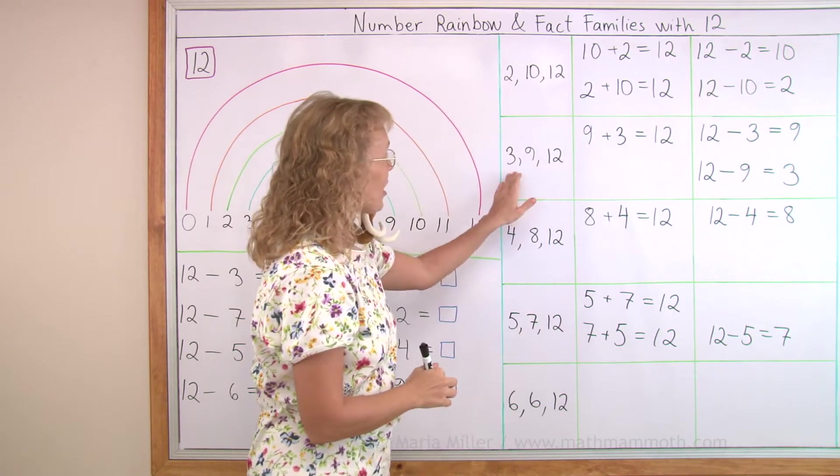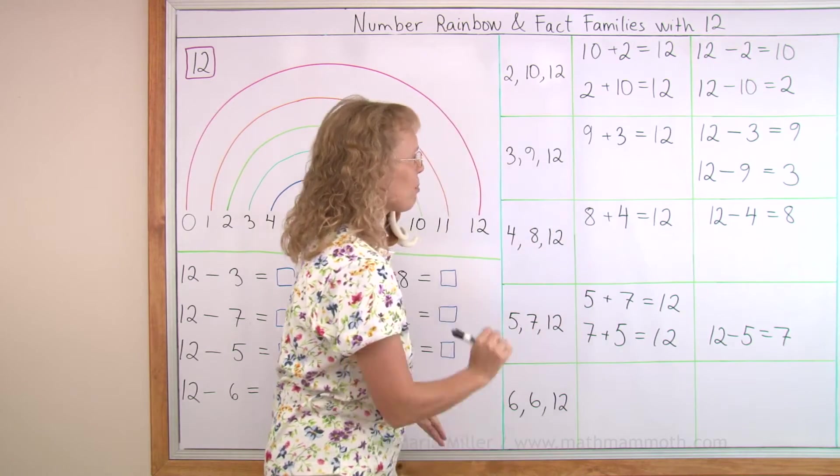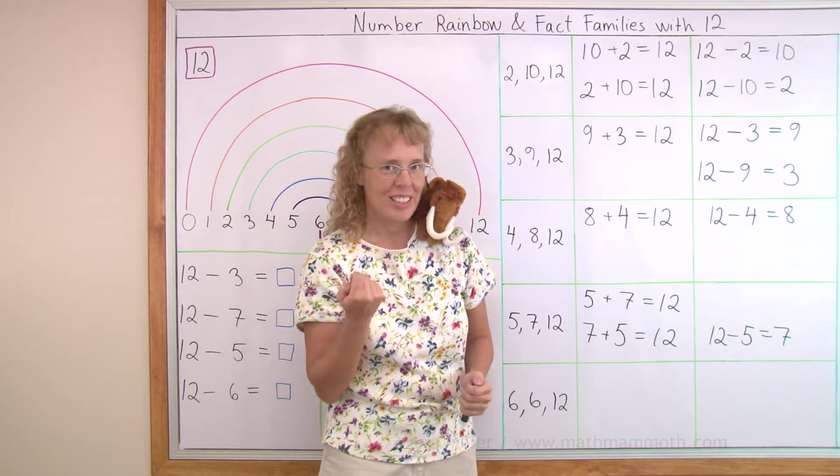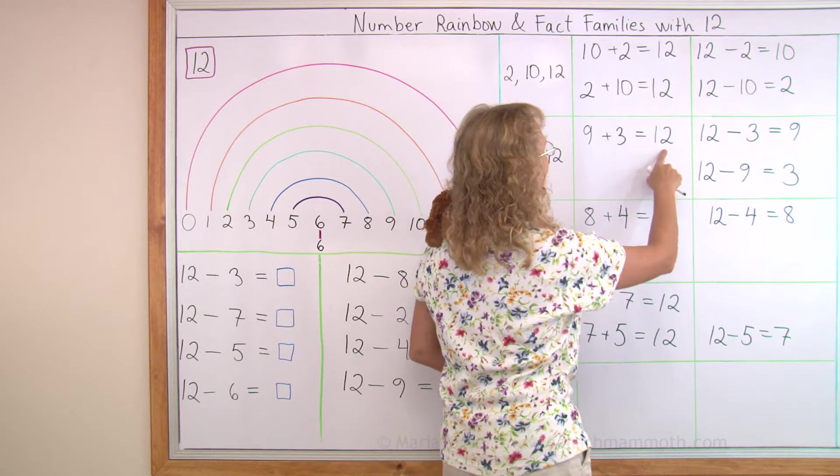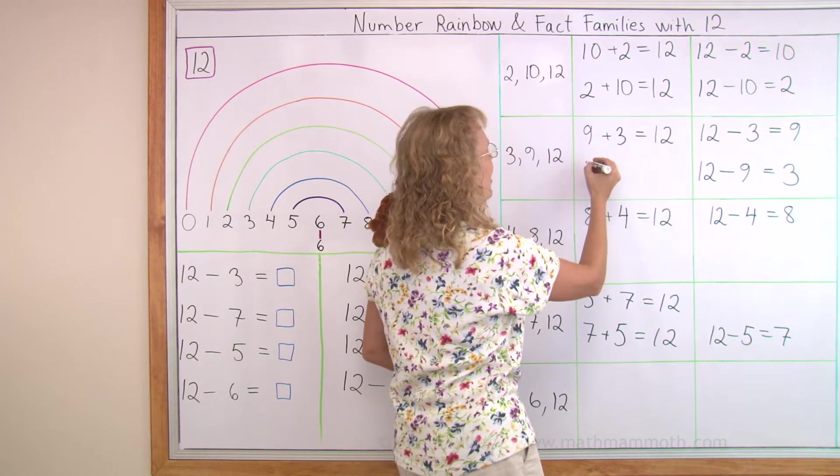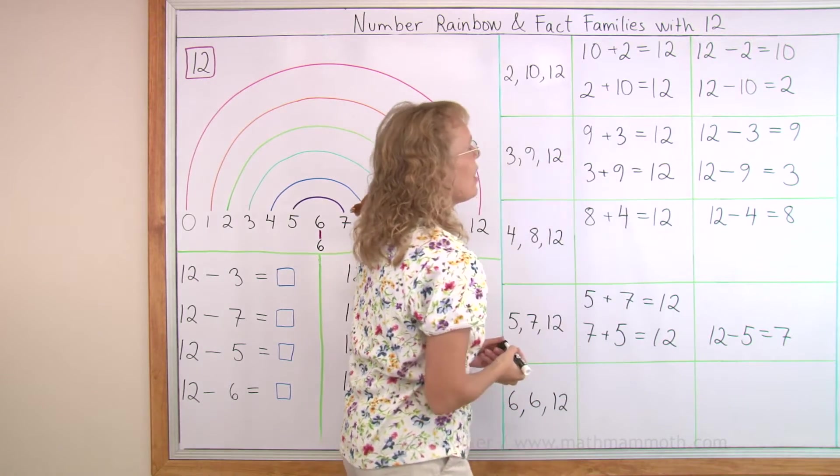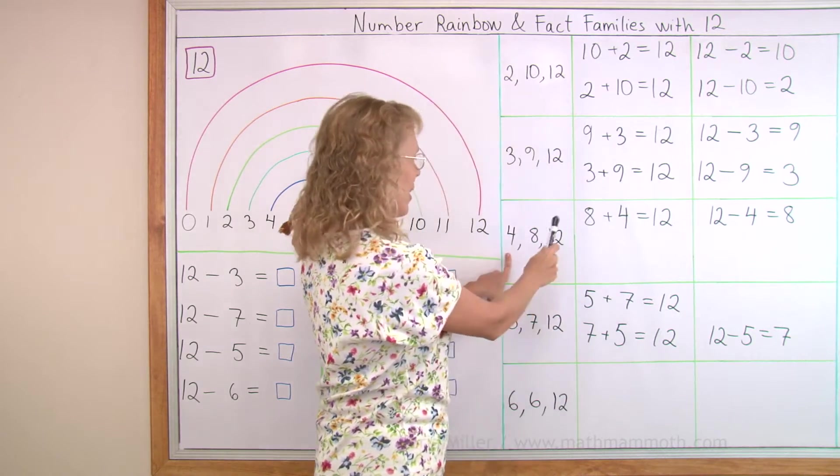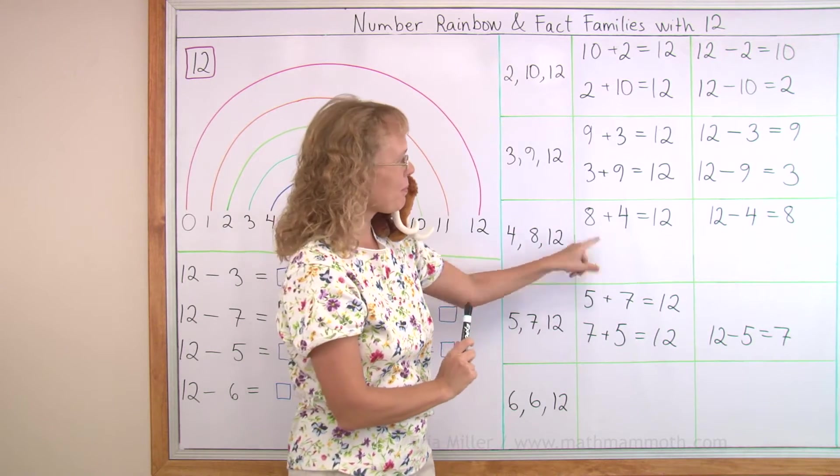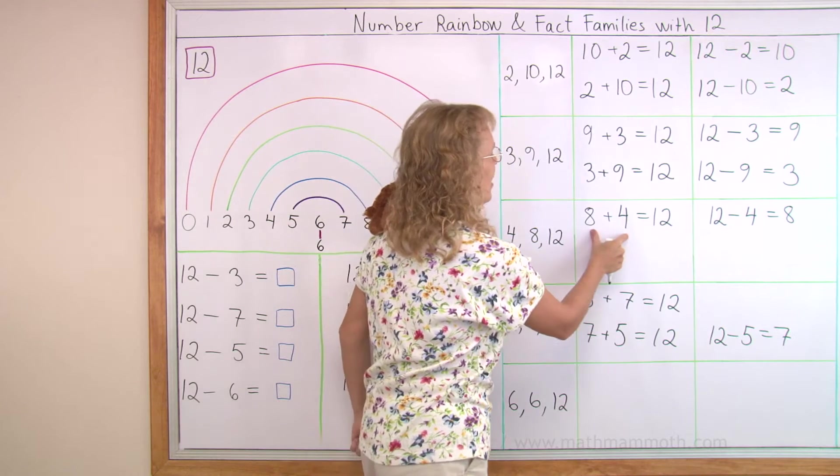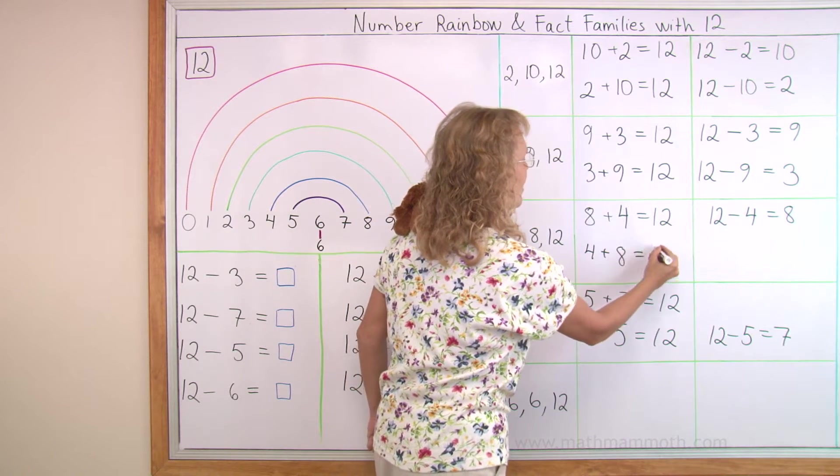The next fact family is 3 and 9, because they make 12. And here's one addition that's missing. Can you tell me what it is? 9 plus 3 equals 12, so we switch these two and get 3 plus 9 equals 12. And over here, 4 and 8 makes 12. What addition is missing here? Again, take these 8 and 4 and switch them. 4 plus 8 makes 12.